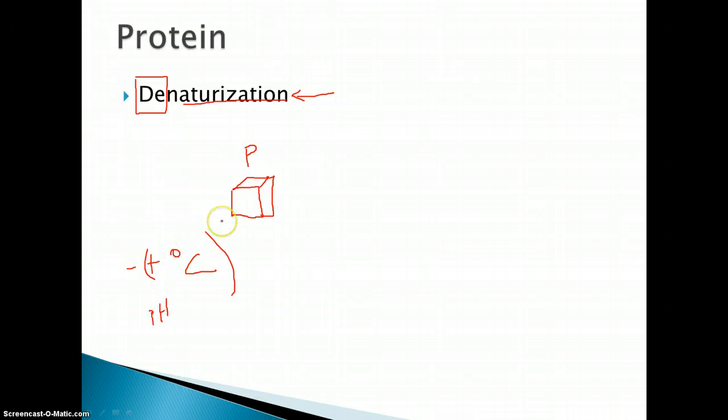What happens to this protein is that it denatures, meaning it becomes unnatural and loses its shape. So this protein might end up looking something like that, circular. So it breaks. So this is a bad thing.